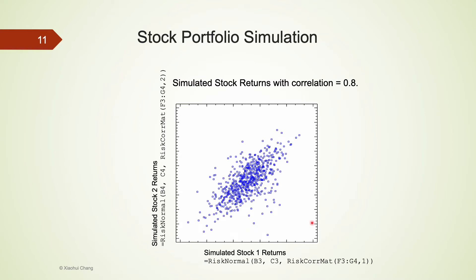After including the risk-call-mat function in risk-normal, the simulated returns have this kind of relationship we would like to see. When the return of stock 1 is high, stock 2 return tends to be high as well.